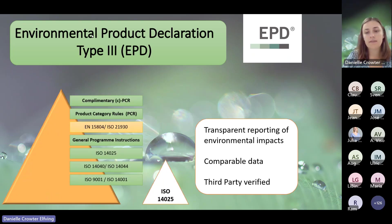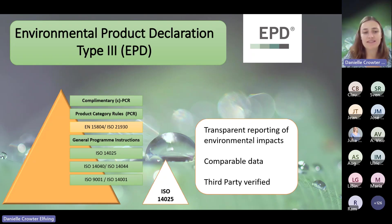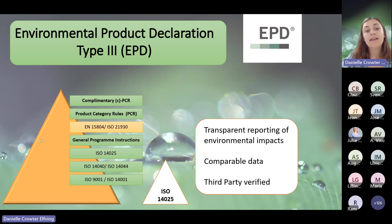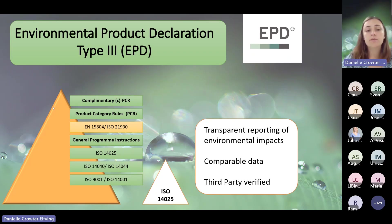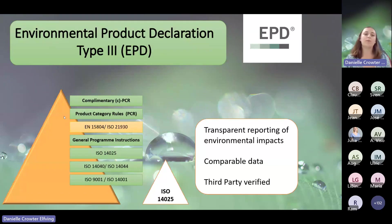EPDs follow some international standards. This pyramid represents the baselines for the EPD. At the bottom we have some ISO numbers which are quite broad, and then ISO 14025 is the specific EPD international standard. We also have our General Programme Instruction, which is our internal guidelines and a mandatory part for program operators such as EPD International. We work with our product category rules, which are product-specific rules and guidelines on how the EPD should be created depending on the product, and they can be complemented with a CPCR. We also work with EN 15804 or the ISO standard 21930, and these are construction-based, which is of course a big sector in EPDs currently.